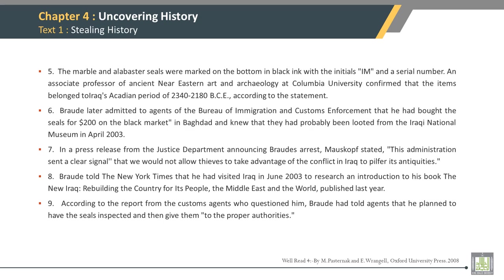First Sentence of Paragraph 5: The marble and alabaster seals were marked on the bottom in black ink with initials IM and a serial number. First Sentence of Paragraph 6: Brode later admitted to agents of the Bureau of Immigration and Customs Enforcement that he had bought the seals for $200 on the black market in Baghdad and knew that they had probably been looted from the Iraqi National Museum in April 2003.